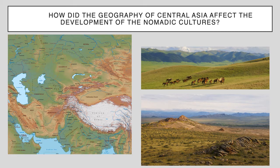I want you to start by thinking about this question: how did the geography of Central Asia affect the development of nomadic cultures? Everything we've been studying up to this point has been settled societies — all the empires you've read about. Those are settled societies: people who develop cities, engage in artisanship and trade, with urbanization reaching population sizes of a million or hundreds of thousands. The Roman Empire, the Han Dynasty, even the ancient Egyptians were settled societies.